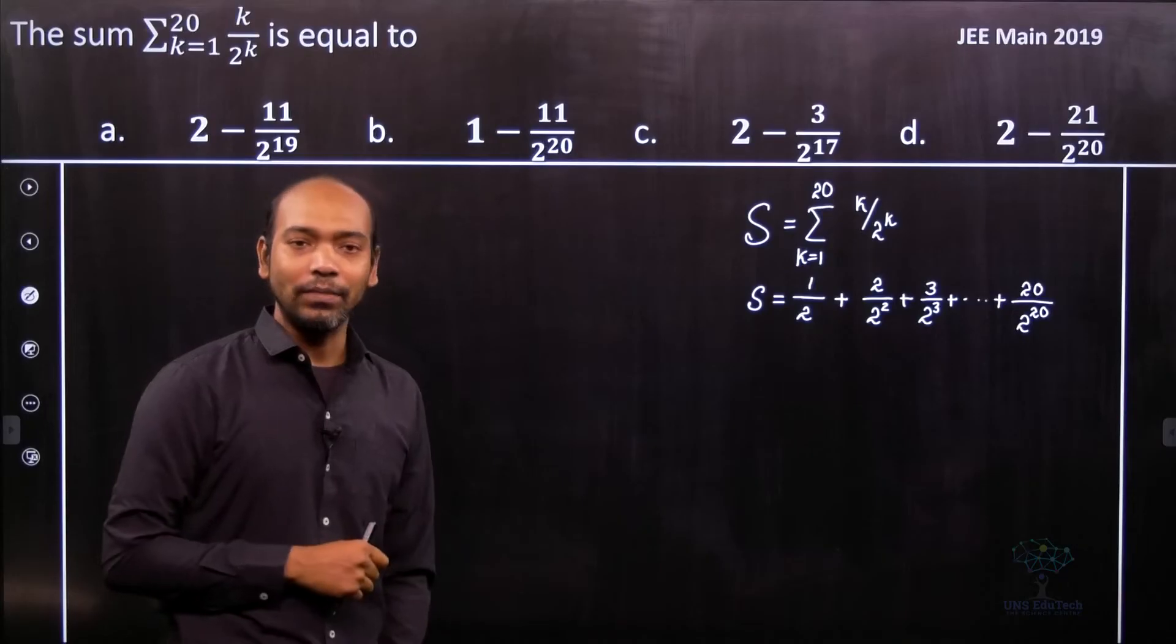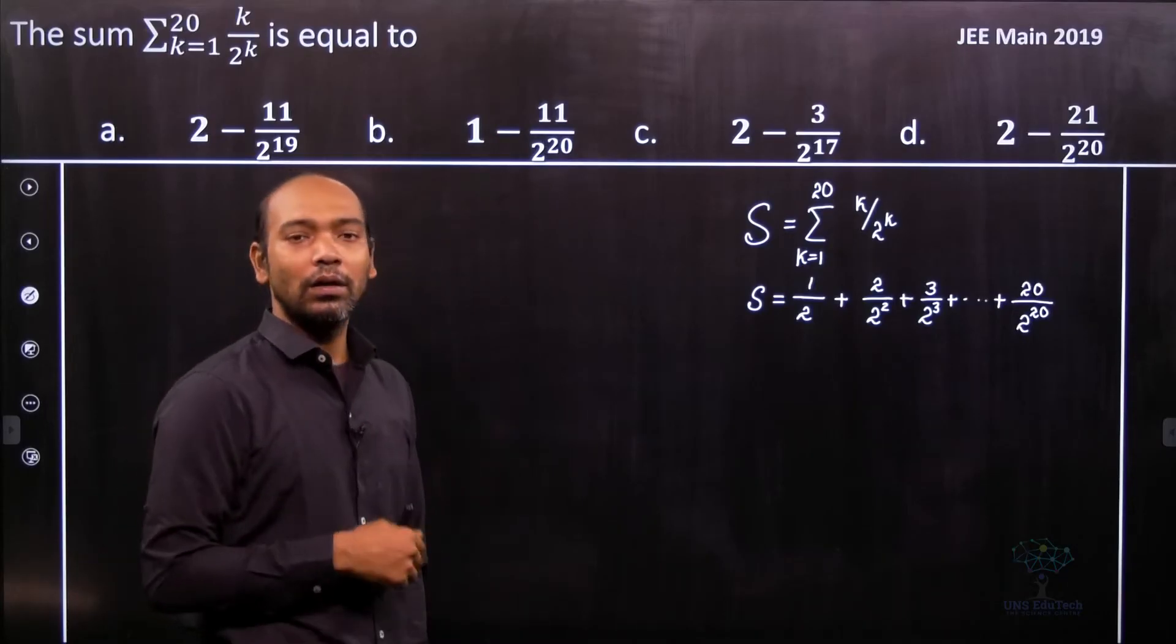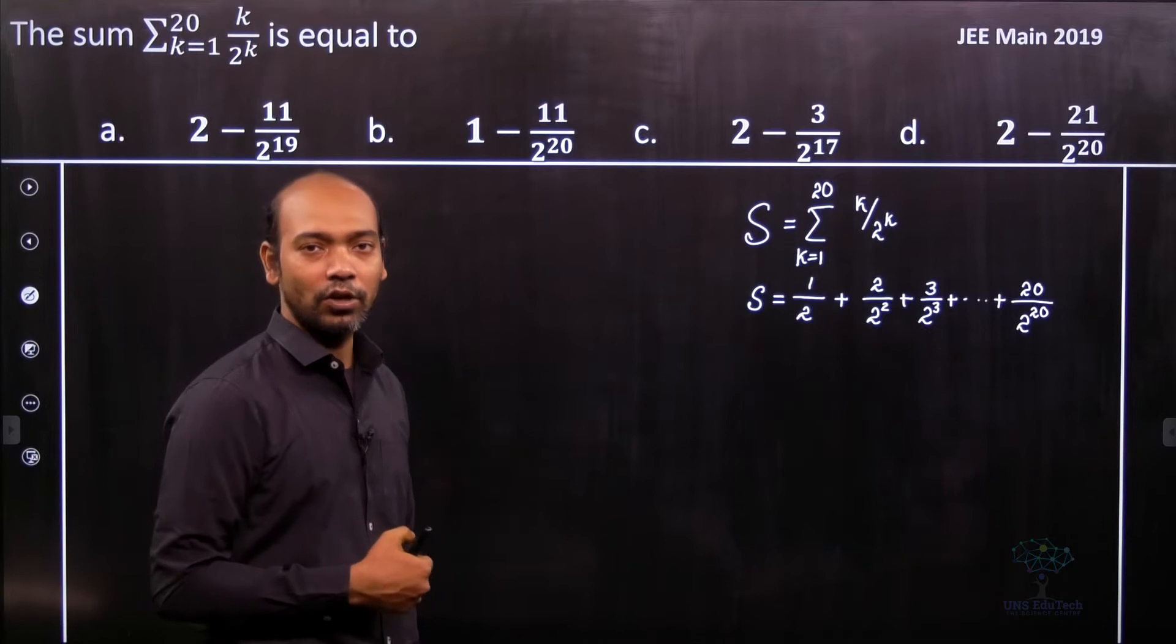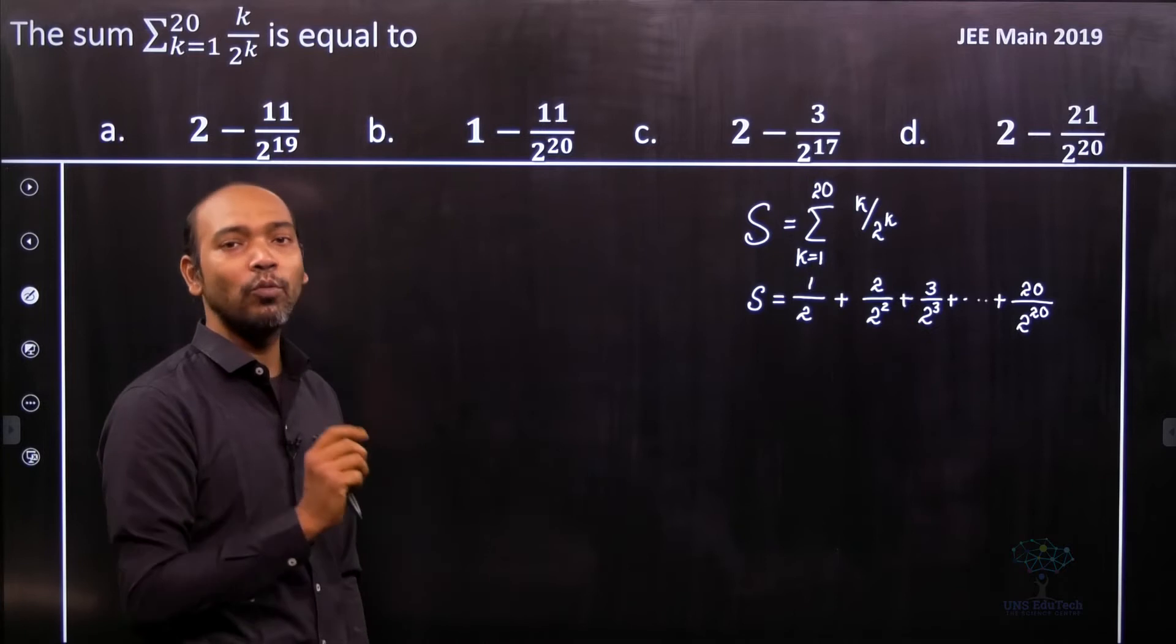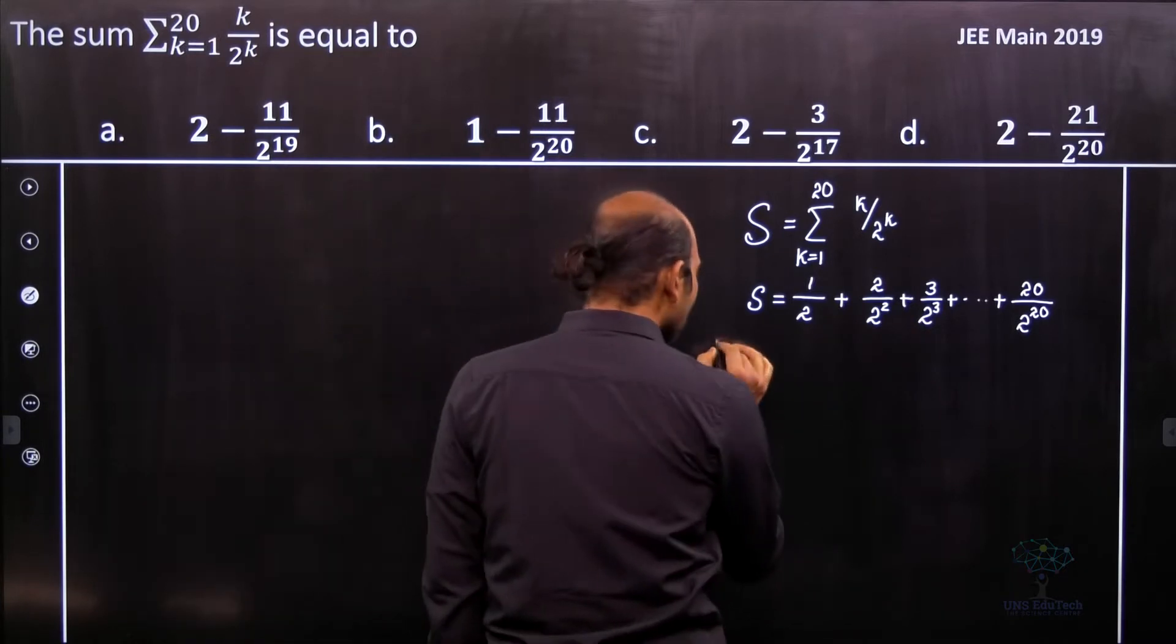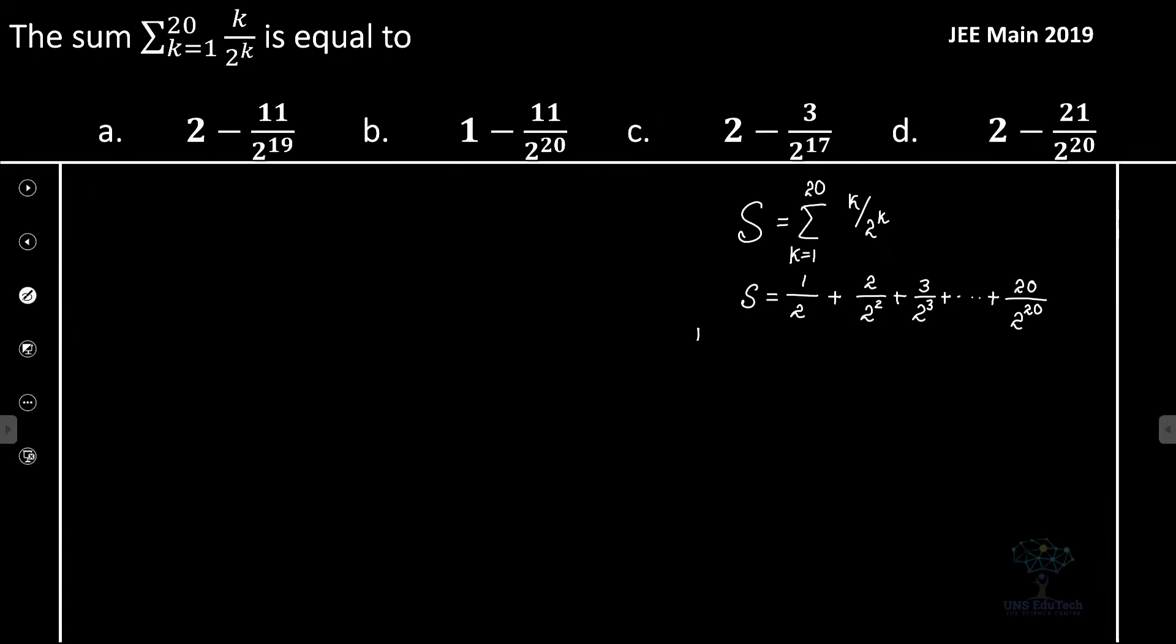Now we have to add them. So first we need to use some tricks for this kind of problem. What is that trick? It's very easy. Here first we multiply both sides by 1 by 2. So let's go ahead. So I'll write that multiply both sides by half. So what happened?